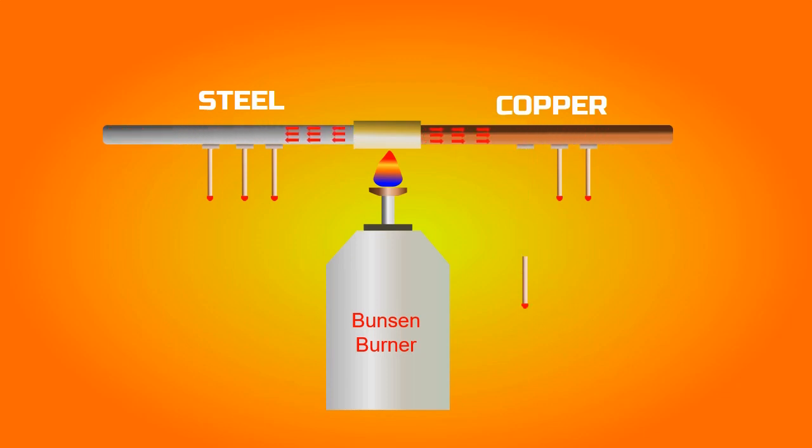The matchsticks on the copper side fall first because the thermal conductivity of copper is much higher than steel. So copper conducts heat faster than steel and melts the wax faster. Now we will see how this property works in a solid.